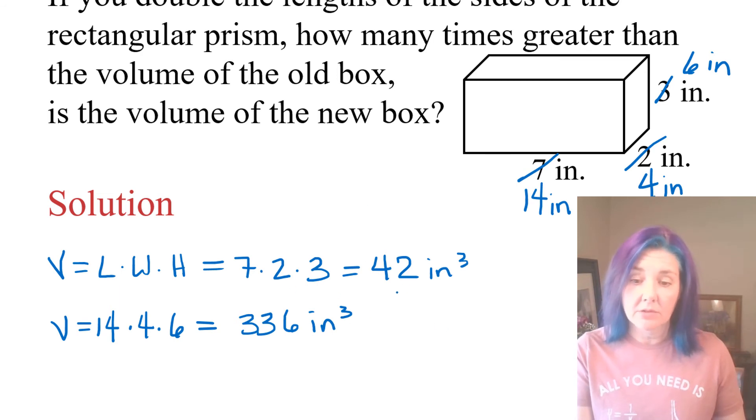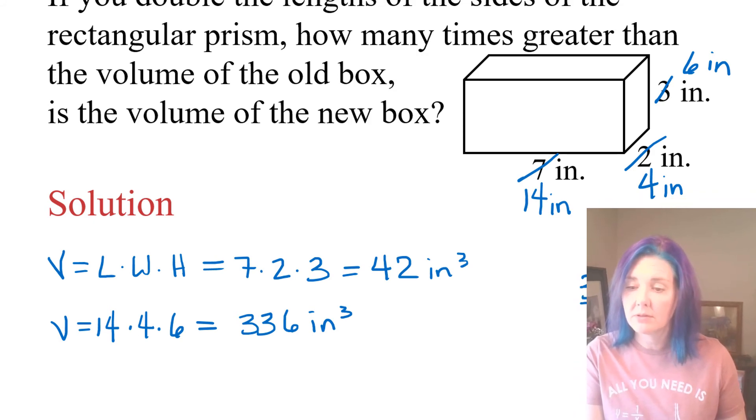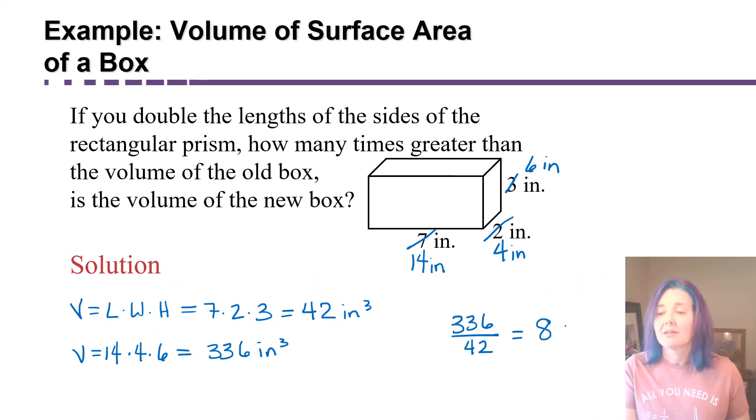Let's see how many times larger than 42 that is by dividing. 336 divided by 42 gives us eight. So it's eight times the volume.